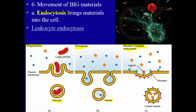Receptor-mediated endocytosis works differently. Here we have a receptor in the cell membrane and molecules called ligands — a ligand is a generic term for something that binds to a receptor. When the ligand fits and binds to that receptor site, the receptor triggers the formation of a vesicle. So the binding itself is a triggering process — that's what distinguishes receptor-mediated endocytosis from the other types.